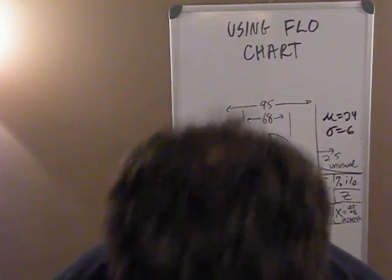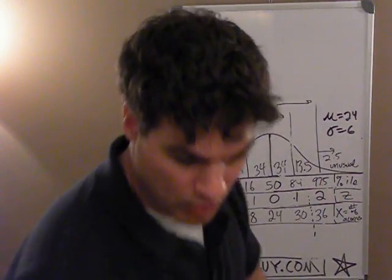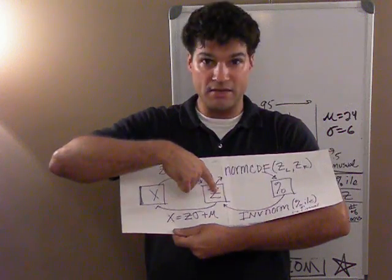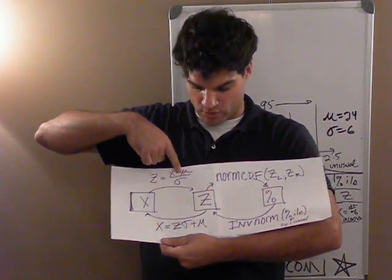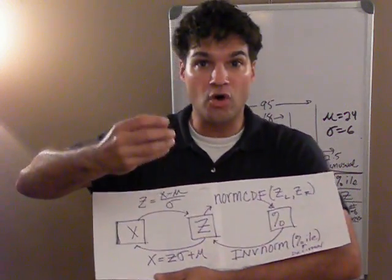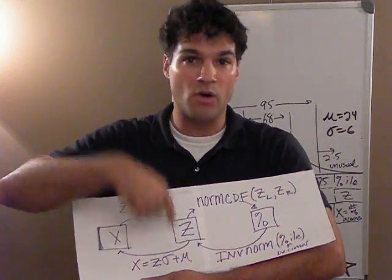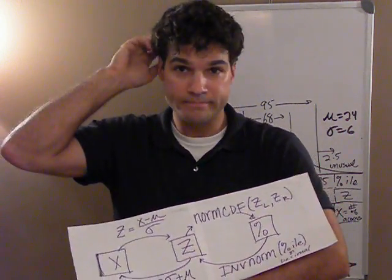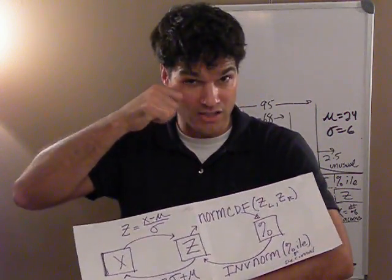First, the flow chart - remember what it is. We just went over the last one. We jump to go from X to Z using the Z formula. You put an X value, a data value in, the Z score comes out - the number of standard deviations away from the mean. Once I have that, if I want to find a percentile, I use normCDF to give me the percent. Usually in a percentile you go from negative 999 up to here.